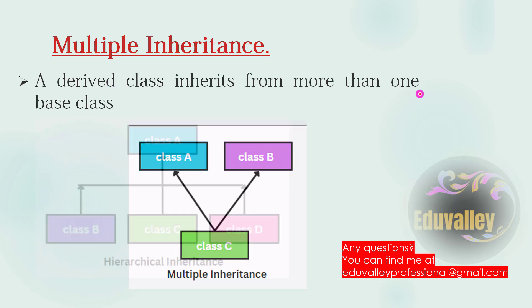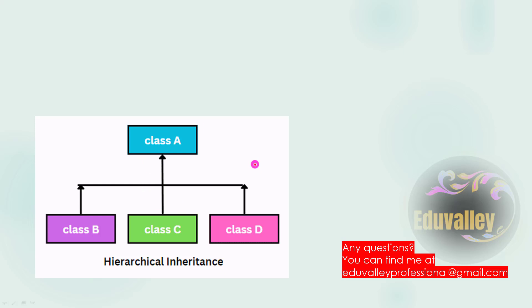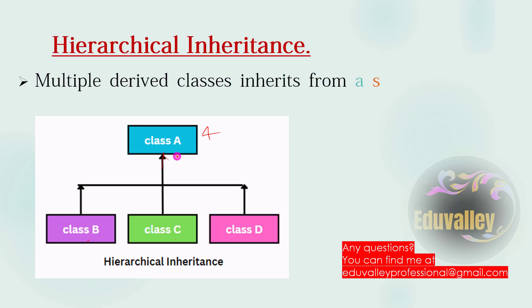That is hierarchical inheritance. Multiple derived classes are inherited from a single base class. In a single base class, multiple classes are derived from single. Hierarchical inheritance means multiple derived classes inherited from a single base class.